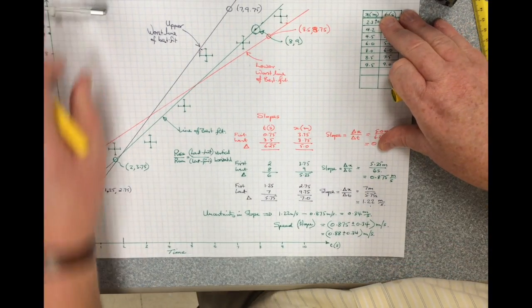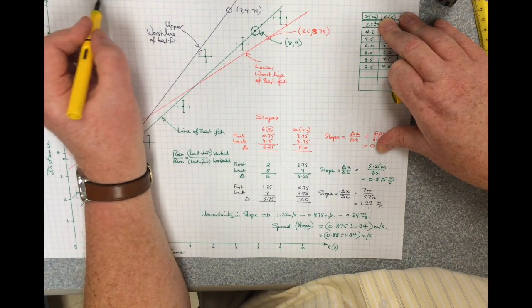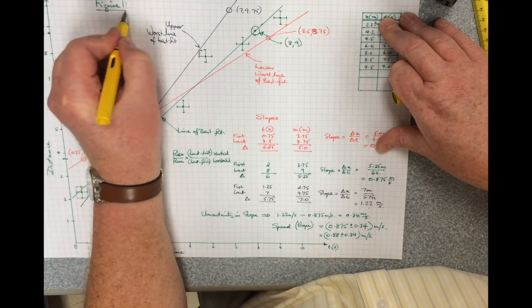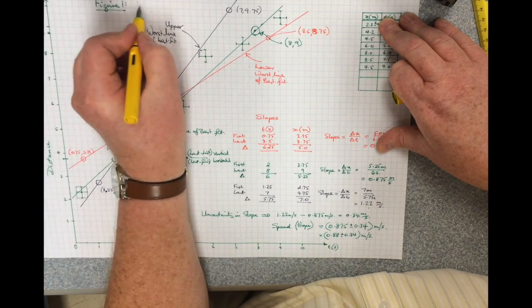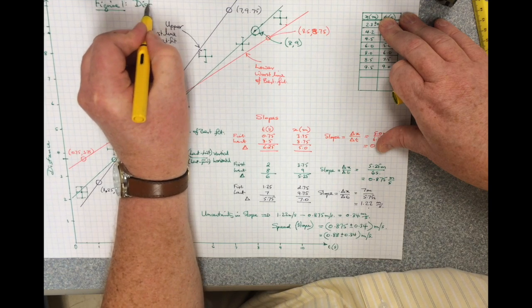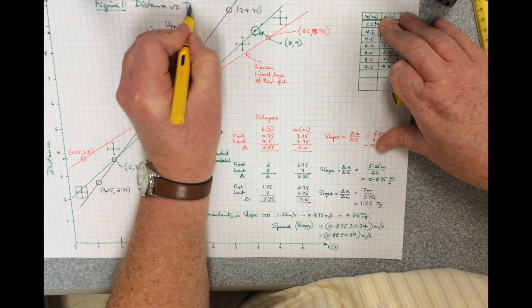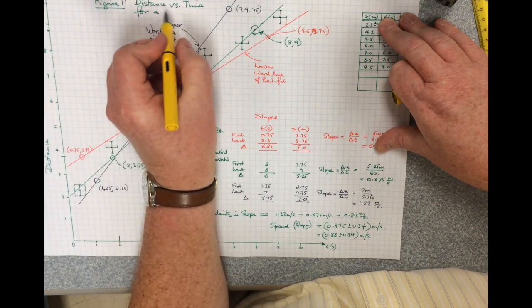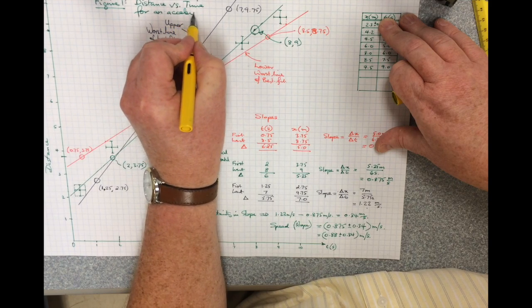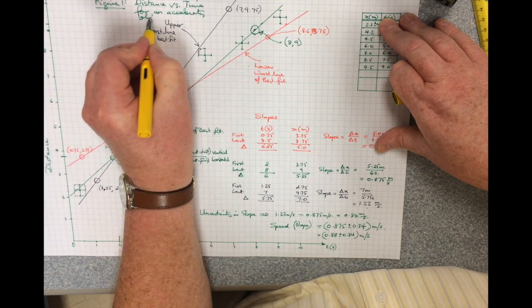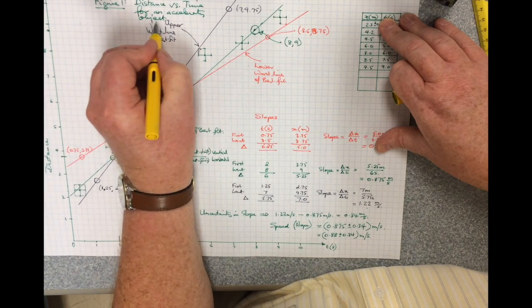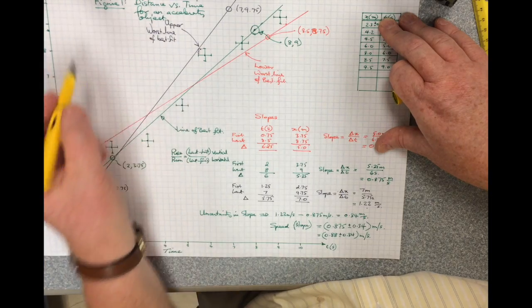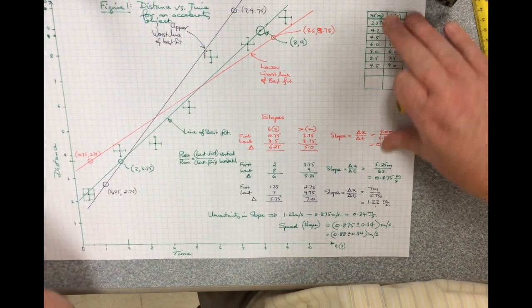And finally, I should put a label on the graph, and I call it a figure. Usually, you put the figure number, figure number one, and I'm going to call it distance versus time for an accelerating object. But is it accelerating? Not necessarily. We'll have to find that out another time.